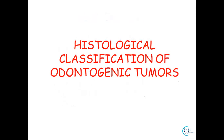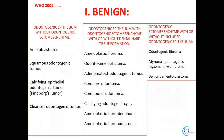Starting with the histological classification of odontogenic tumours, in 2005 WHO classified odontogenic tumours into benign and malignant categories. The benign category was further subdivided into: odontogenic epithelium without odontogenic ectomesenchyme; odontogenic epithelium with odontogenic ectomesenchyme with or without dental hard tissue formation; and odontogenic ectomesenchyme with or without including odontogenic epithelium. The adenomatoid odontogenic tumour in 2005 was categorised under odontogenic epithelium with odontogenic ectomesenchyme with or without dental hard tissue formation.